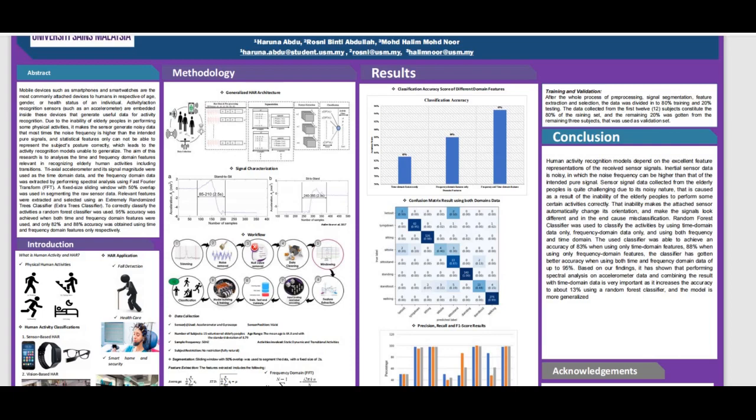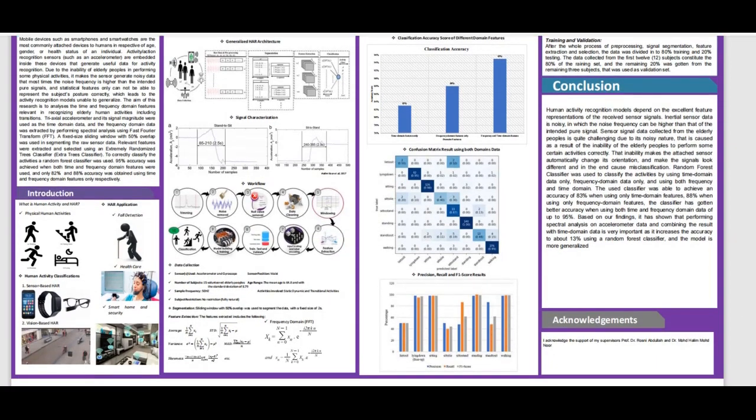Human activity recognition is classified into two: sensor-based and vision-based. Sensor-based is what our research focuses on, where we make use of smartphones, smartwatches, or smart glasses with sensors embedded inside like accelerometer or gyroscope to capture the data in a three-axis form. But vision-based makes use of the camera and has problems such as intrusiveness, especially for elderly people that cannot take care of themselves and whose privacy is important.